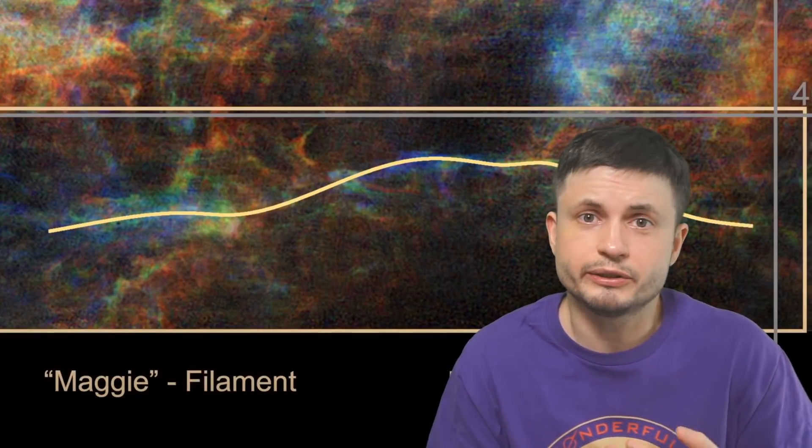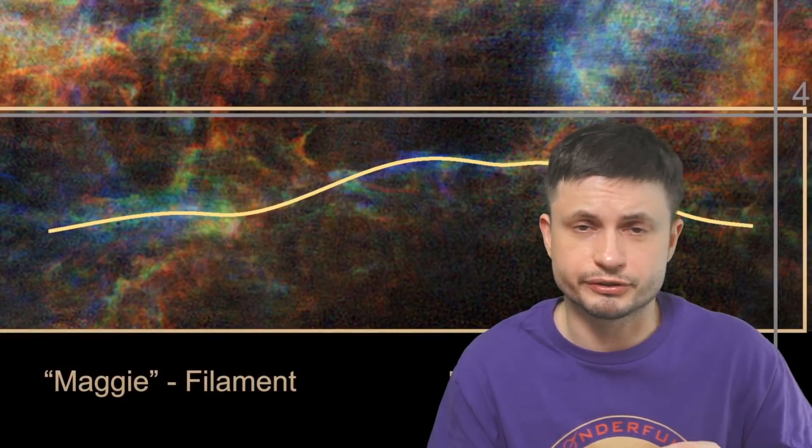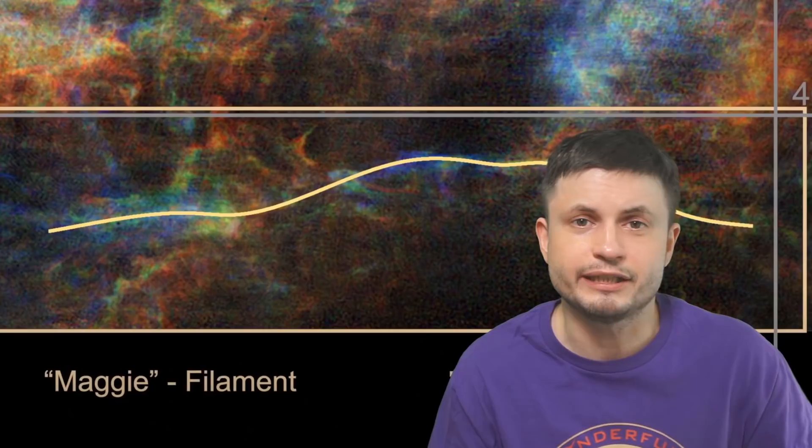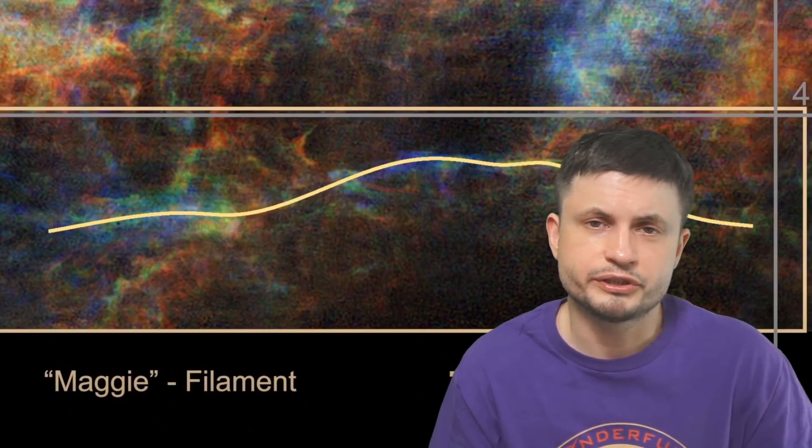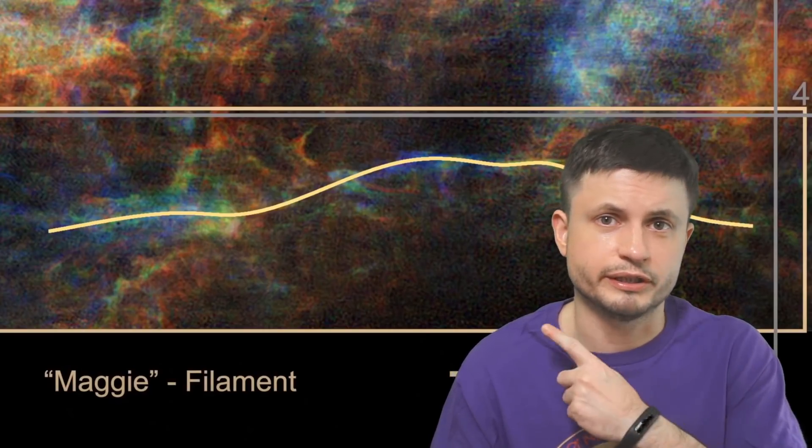And in the past, all of the other similar filaments or clouds discovered in the Milky Way have always been approximately 800 light years in length, which is about a fifth of the size of what this is.